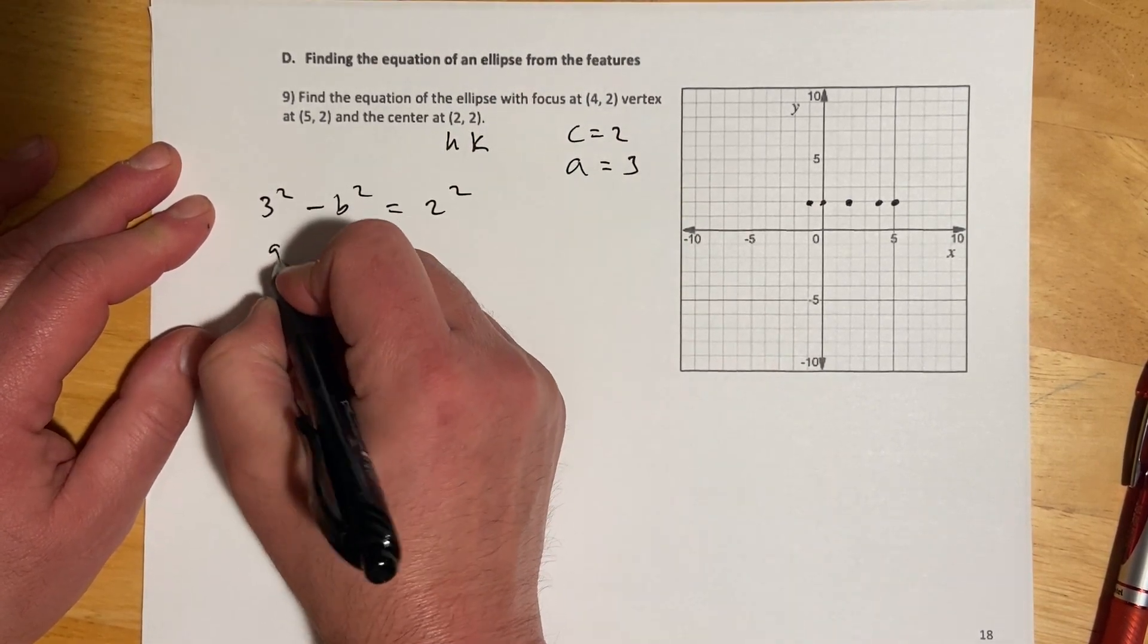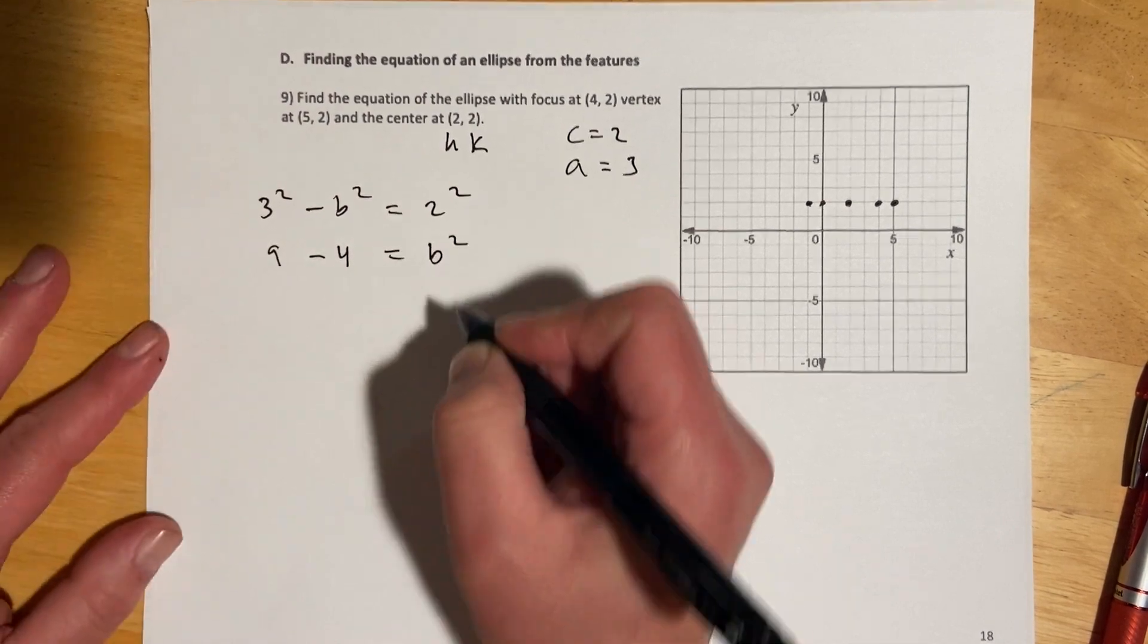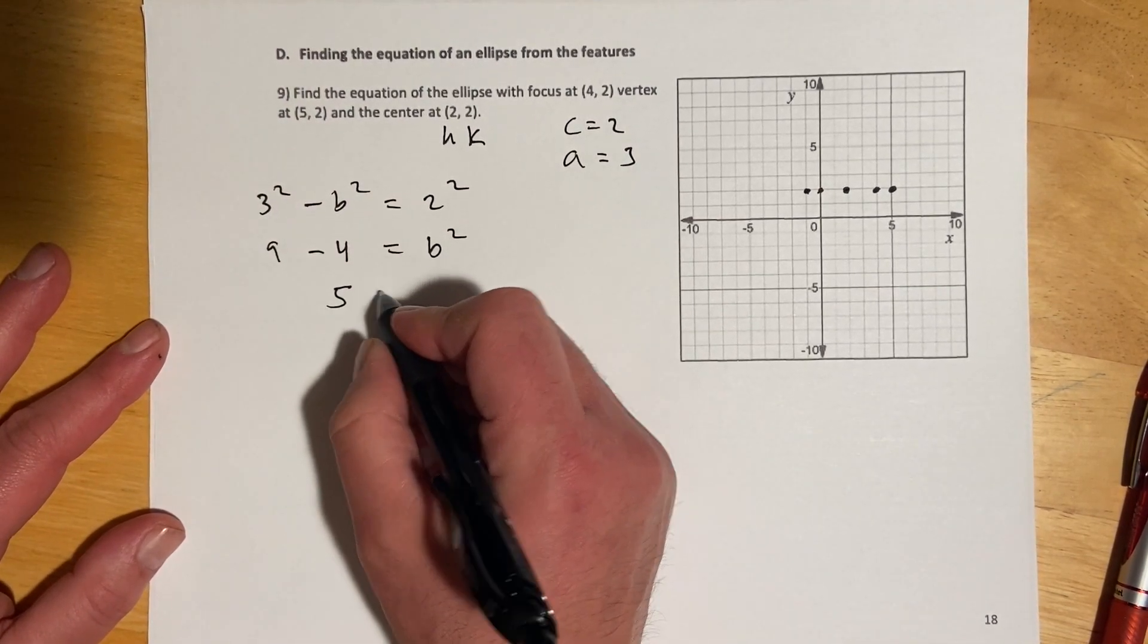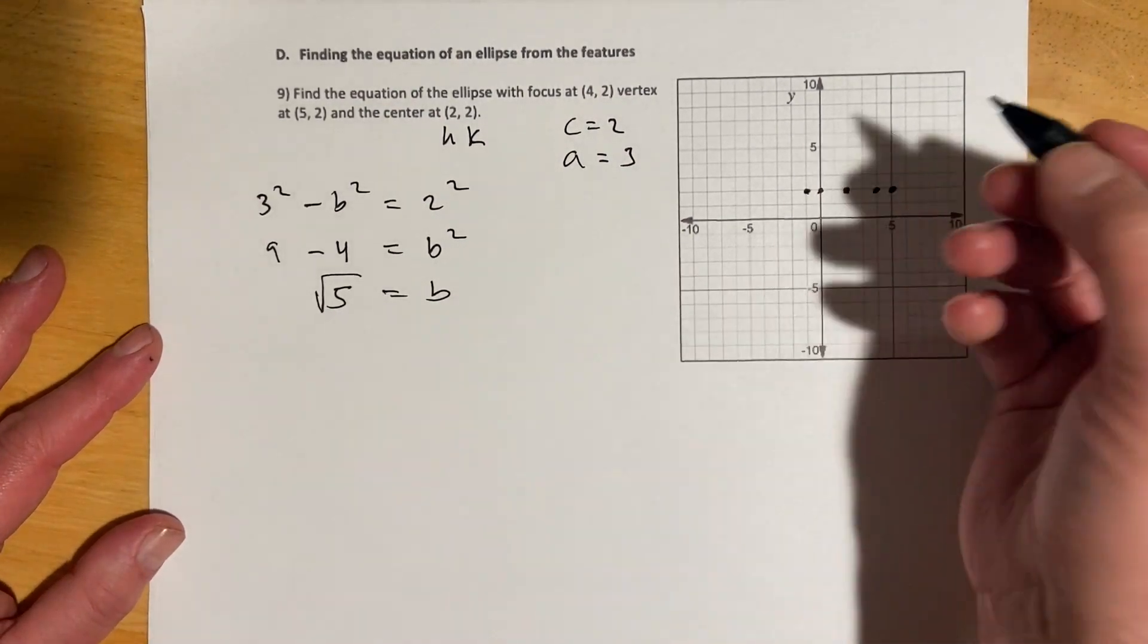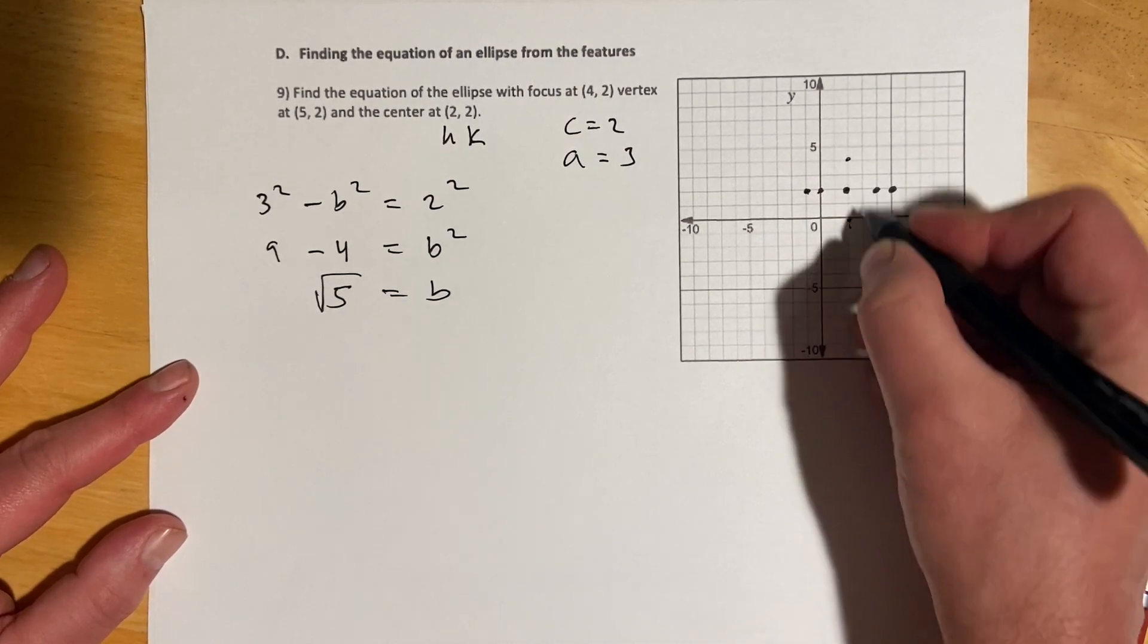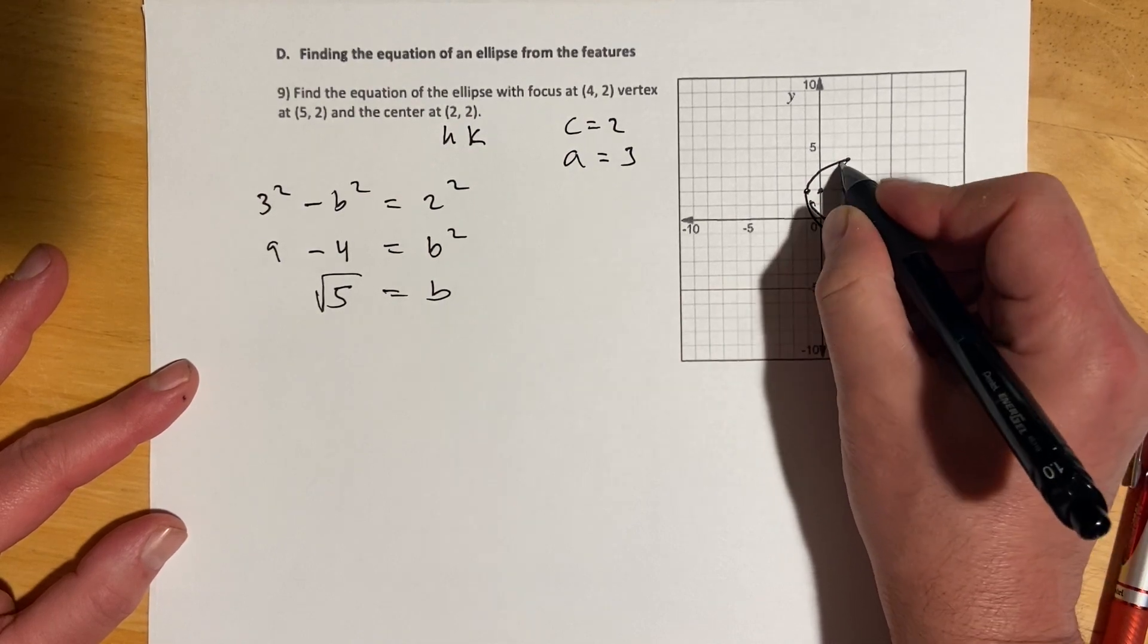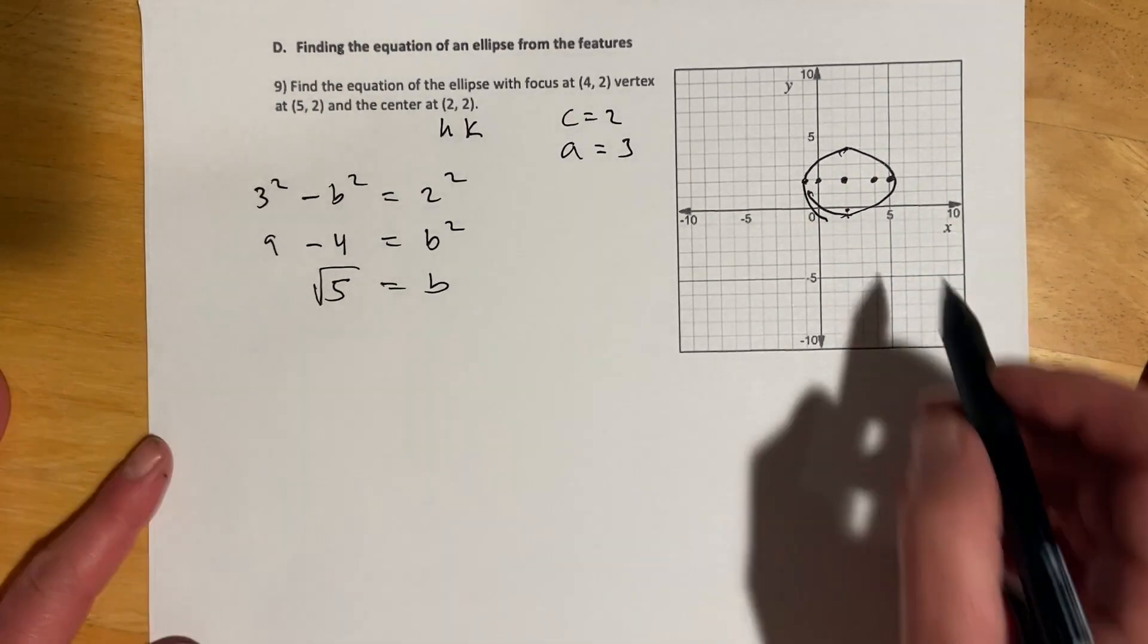So, we'll go 3 squared minus b squared equals 2 squared. And flip-flop those. And 9 minus 4 equals, adding that over, b squared. And then root both sides. Root 5 equals b. And that's about 2.2, just to finish off the graph. So, something like that.